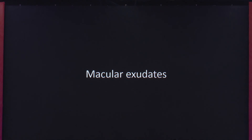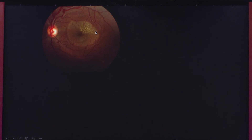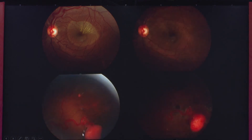Another clinical sign we come across is macular exudation. Here we see a young patient with macular exudates. The clue is: if you follow these blood vessels to the periphery, you will see a tumour — the retinal hemangioblastoma — which can cause exudation in the macula. You can see the exudates have gone away post-treatment with laser photocoagulation.